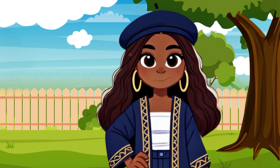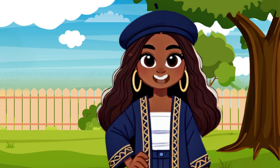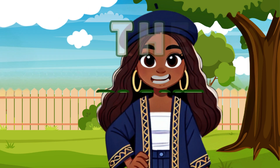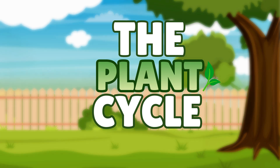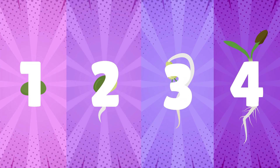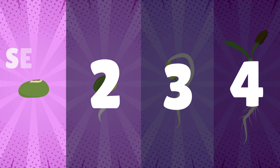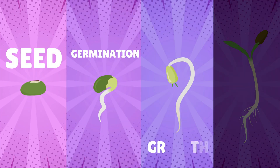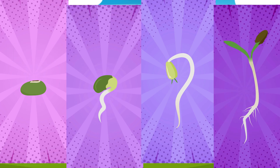Greetings. I am Auntie Ajna and today we will talk about the plant life cycle. There are four stages in the plant life cycle: seed, germination, growth, and reproduction.